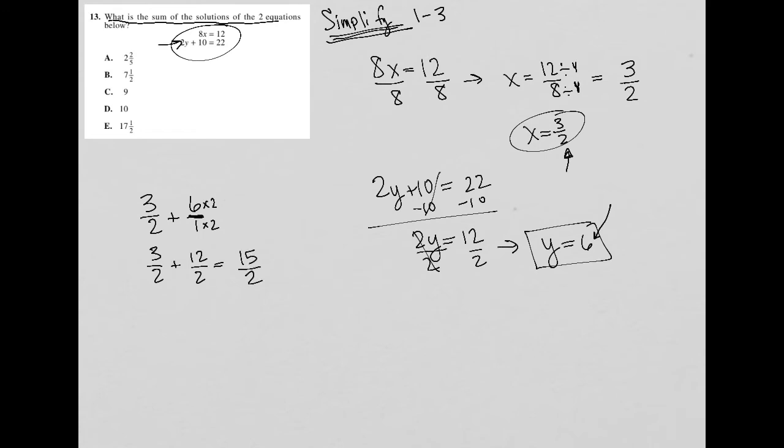And I look at my answer choices now and I don't see any improper fractions. So I can say, how do I rewrite 15 over 2 as a mixed number? Well, that would be 7 and 1/2. So I can look at it as 2 into 15 goes 7 times.